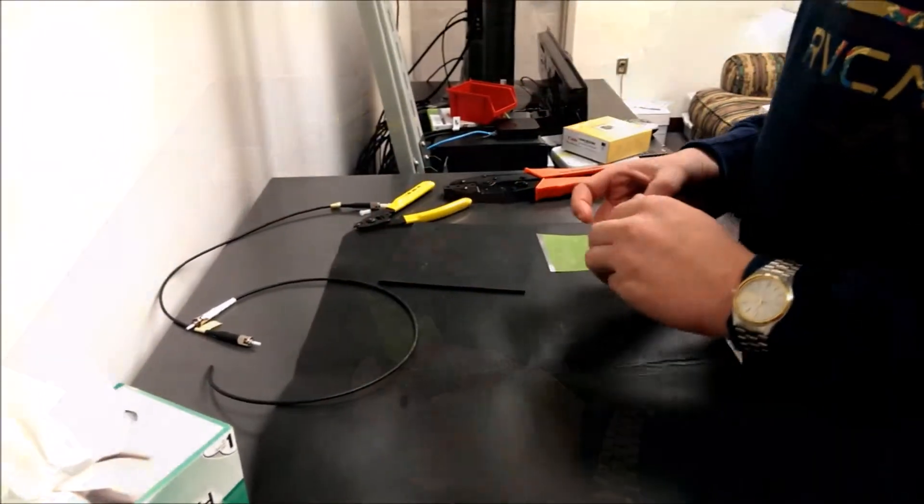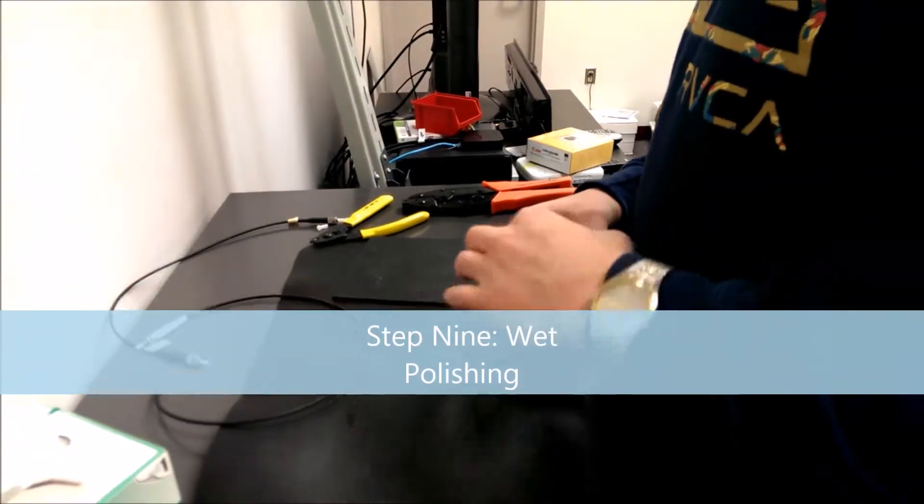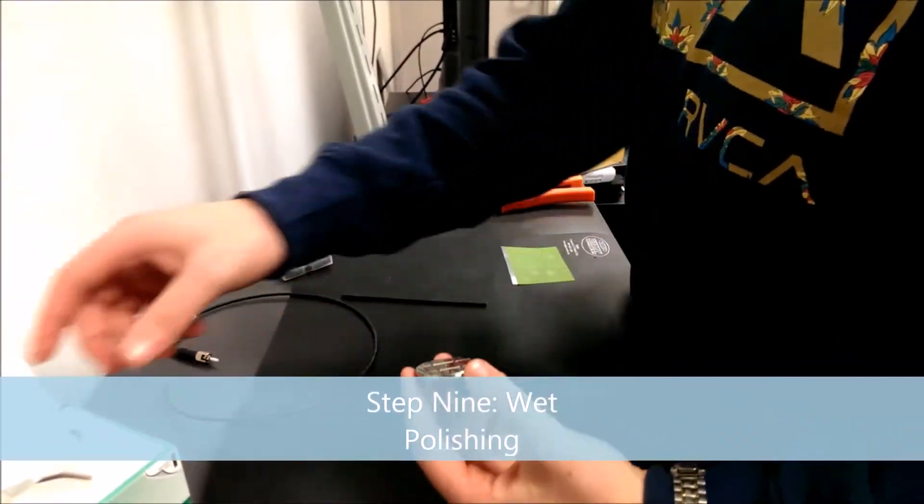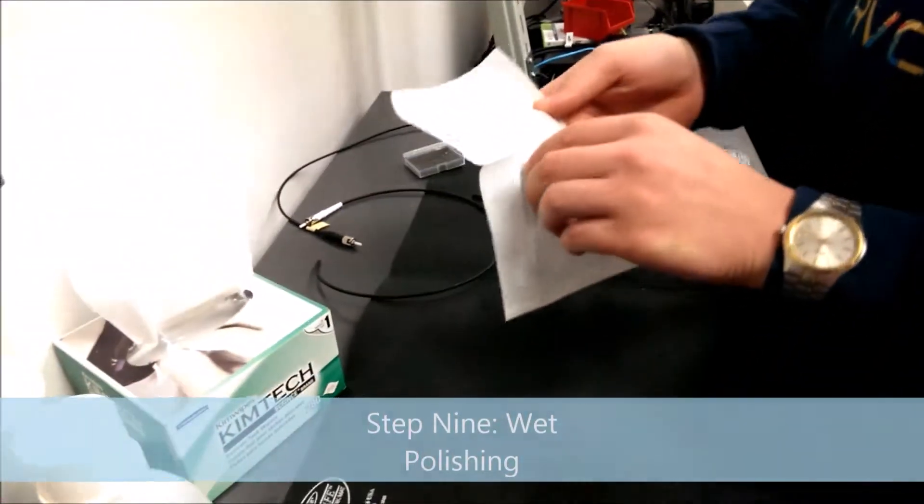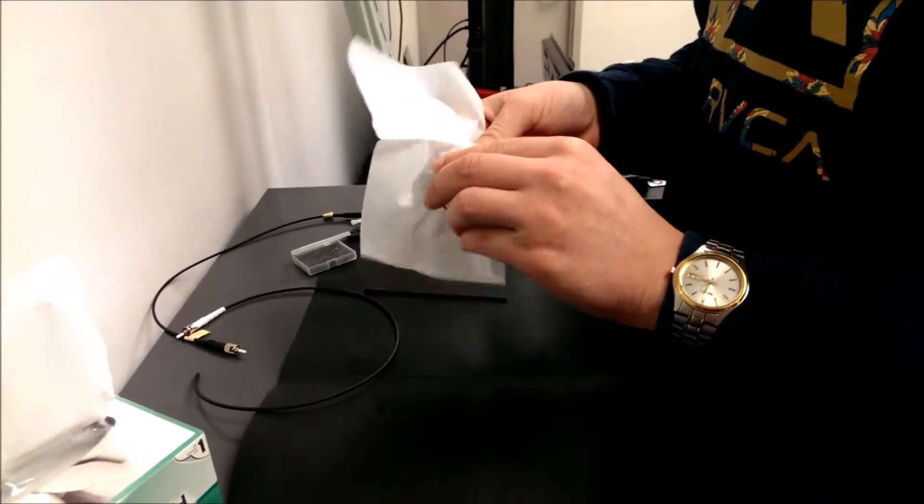So the next step after doing a dry polish is doing a wet polish. And for this one you will need a polishing puck. You just want to take a little bit of alcohol, clean the bottom of it, make sure it is clean.